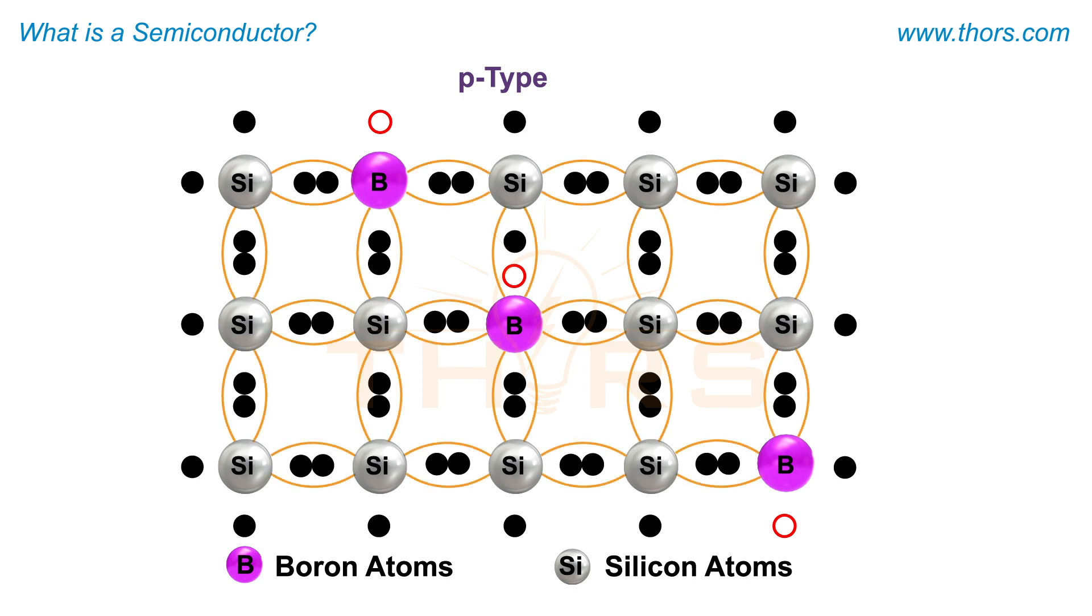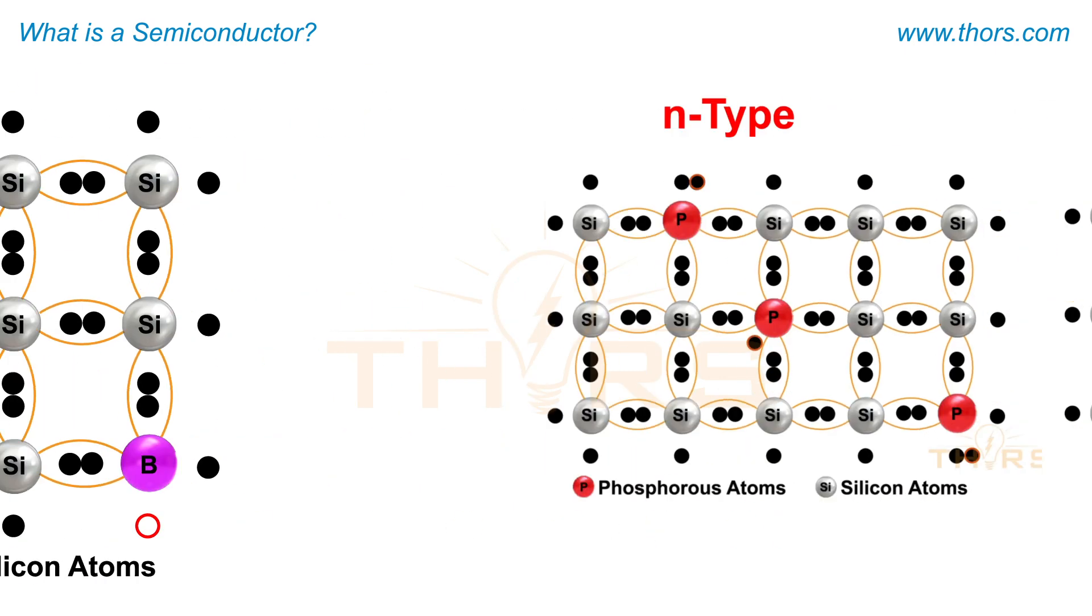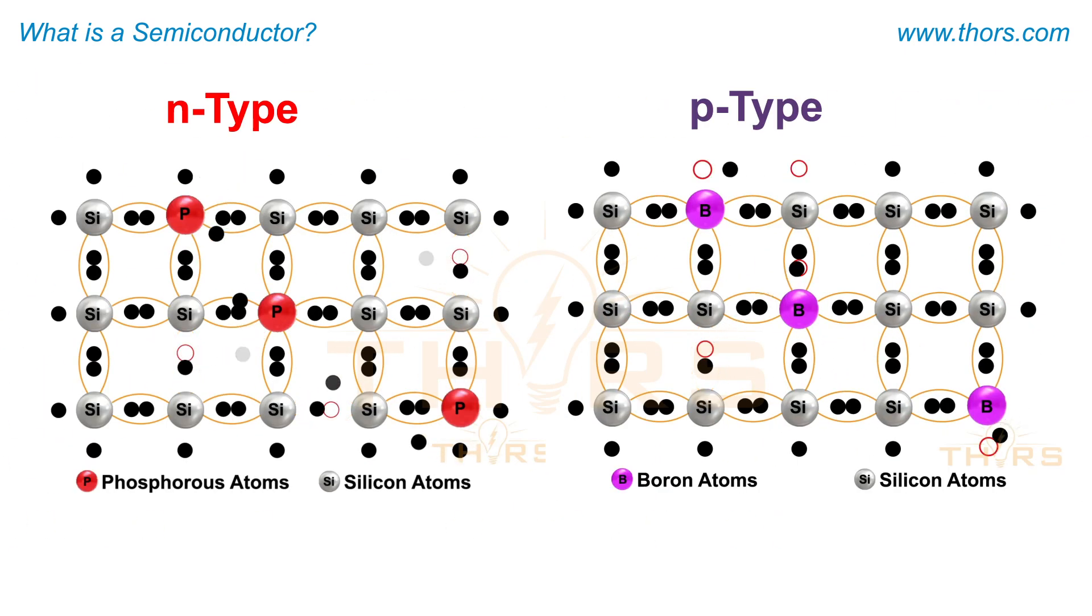In a p-type semiconductor, adding a dopant such as boron, which has three electrons in the outermost shell to silicon, creates holes. The holes are positive charges formed by the absence of electrons. The free electrons and holes conduct current when an appropriate voltage is applied.